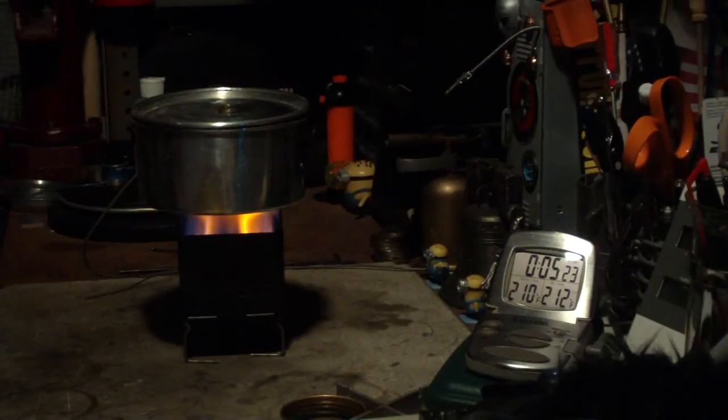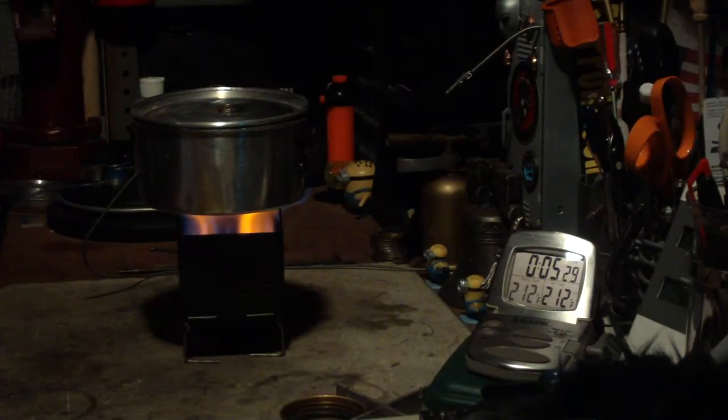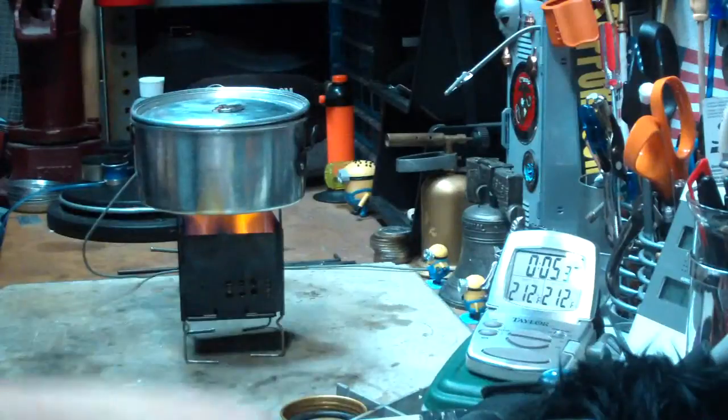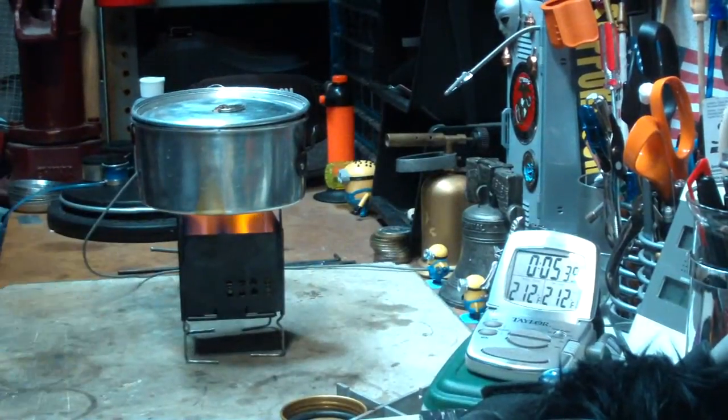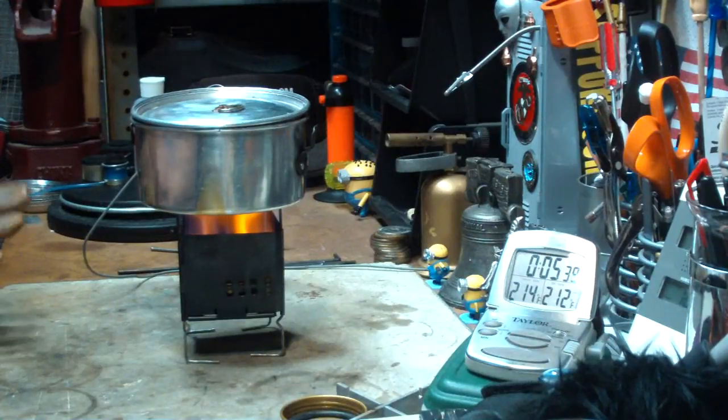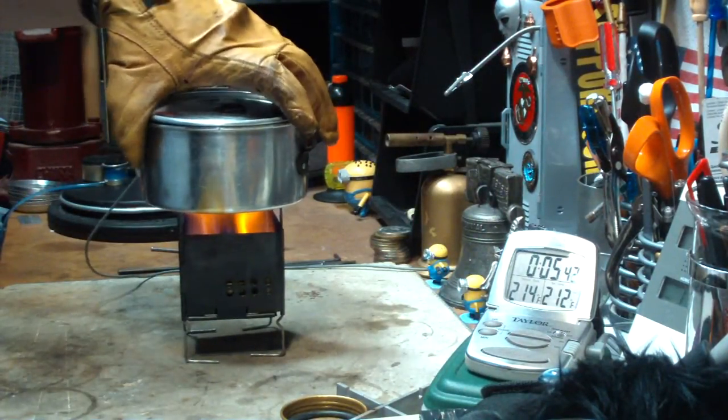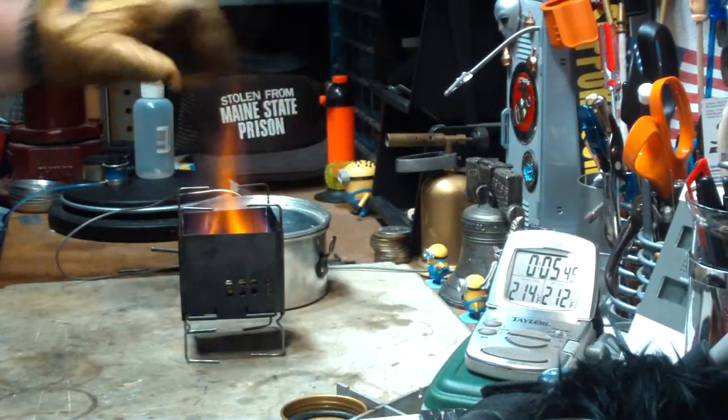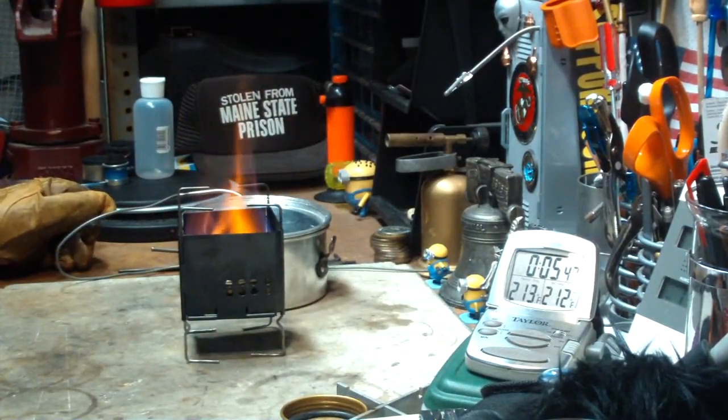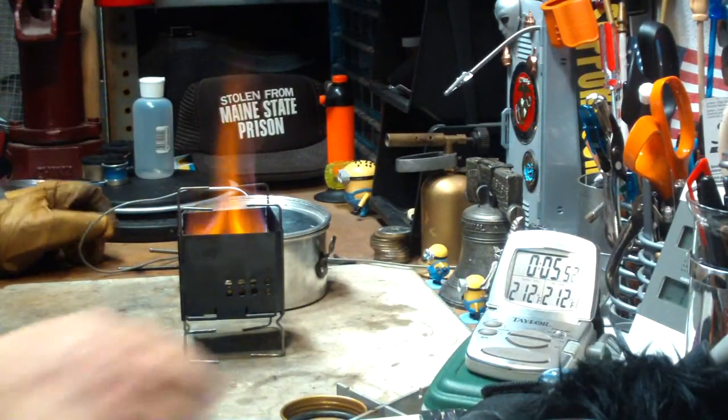There we have 210, 211, 212, and 5:25, let's say. Well, that was fast. 5:25. Okay. So, that was two cups of water, starting at 60 degrees. Room temperature is 79 degrees. Humidity, 70, what's it say, 73.